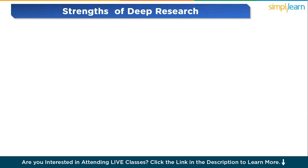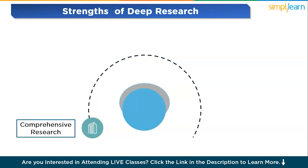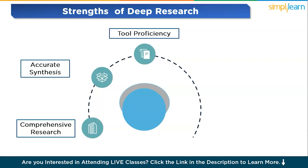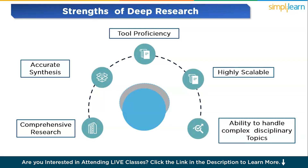After discussing all of this, let's cover the key strengths of Deep Research. First, it performs comprehensive research and has very accurate synthesis. It has tool proficiency, meaning the model is iterative and allows refinement of results over time, ensuring answers improve with additional data. It is also highly scalable and has the ability to handle complex cross-disciplinary topics.